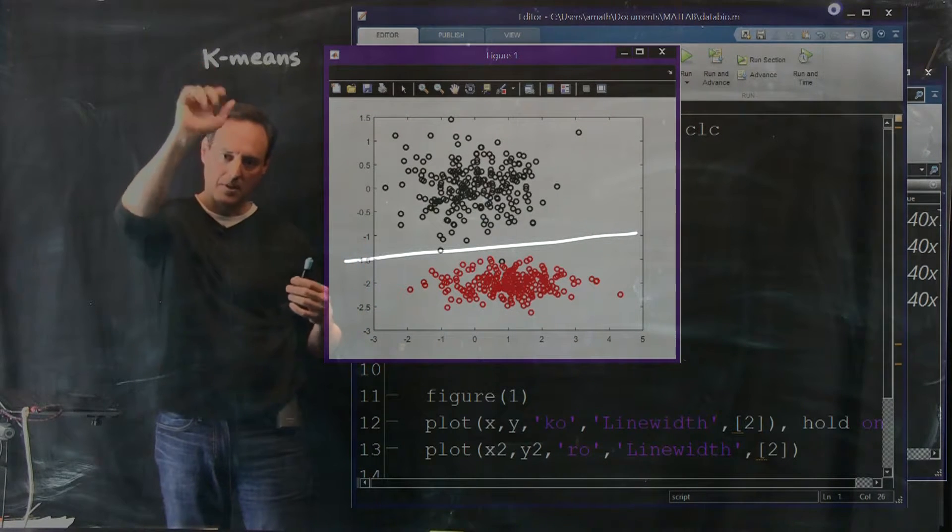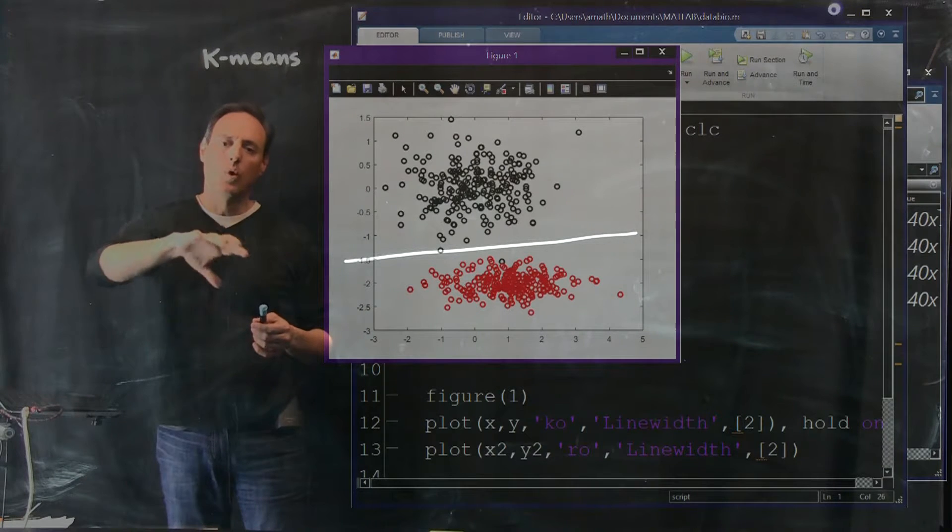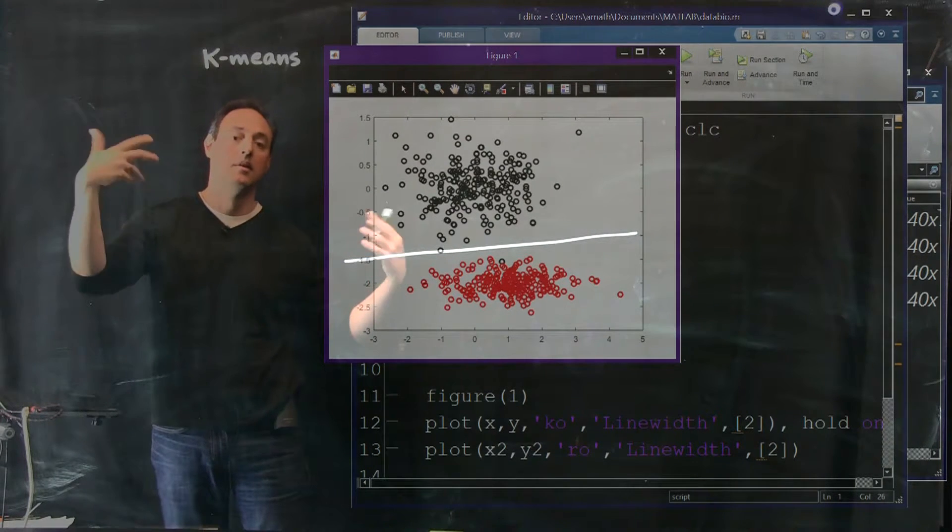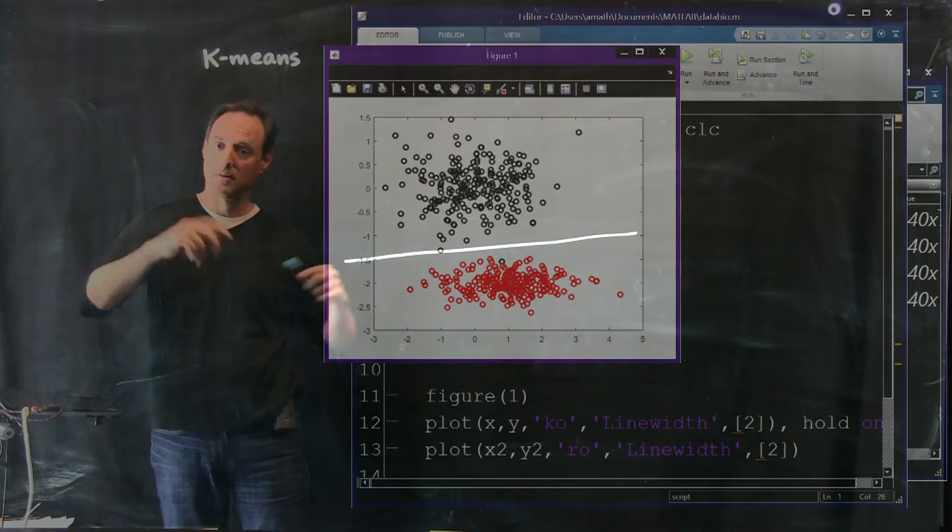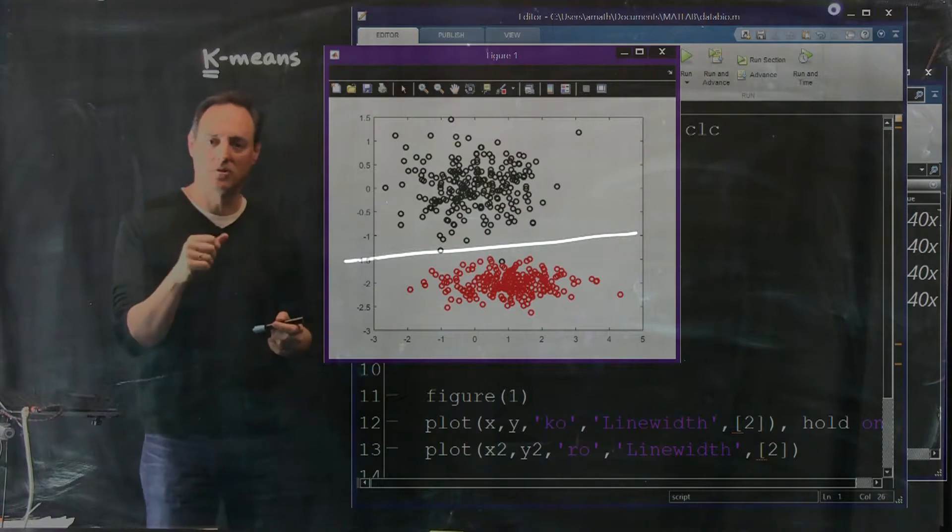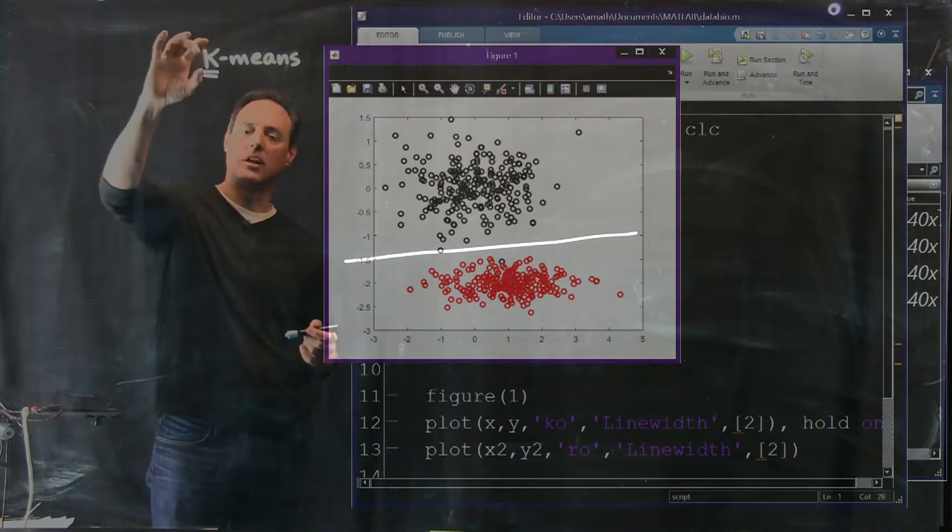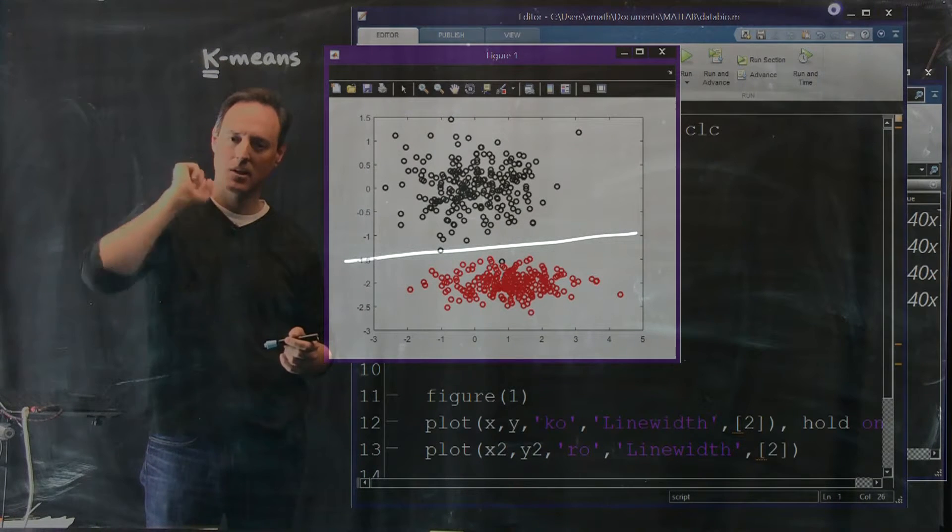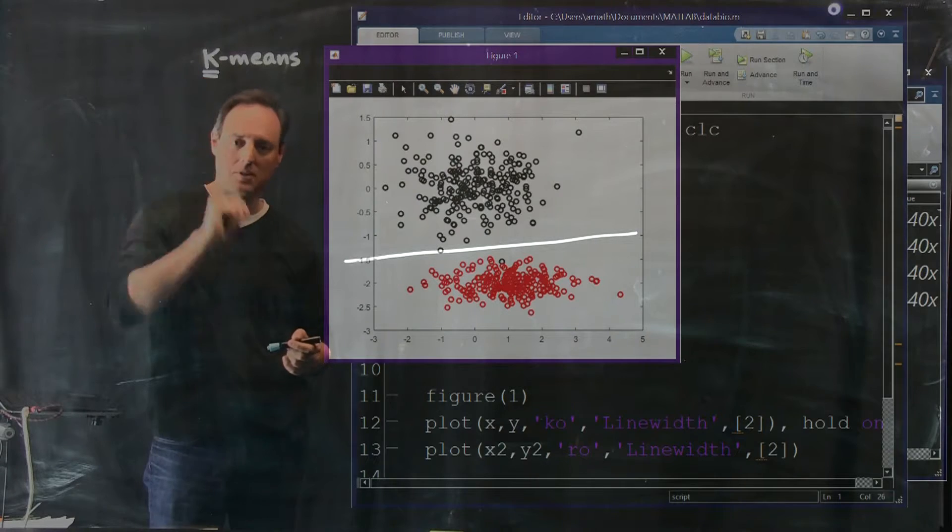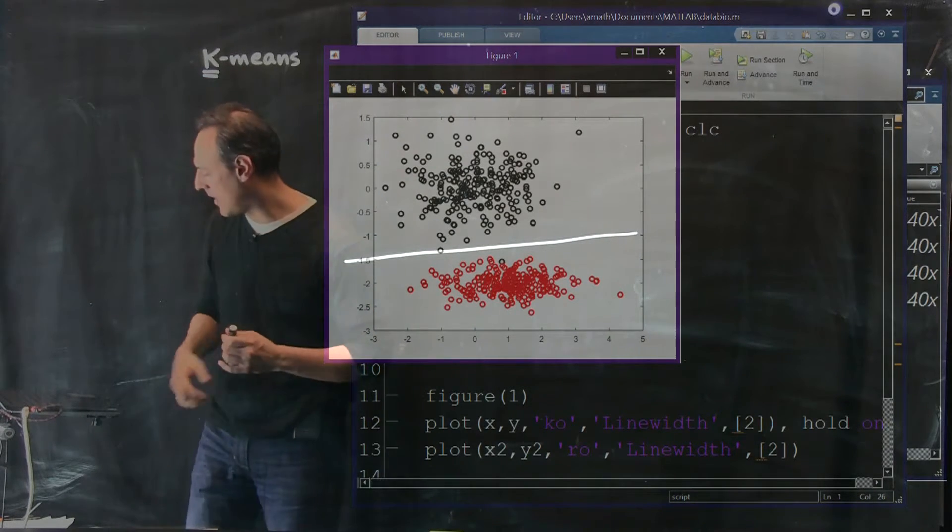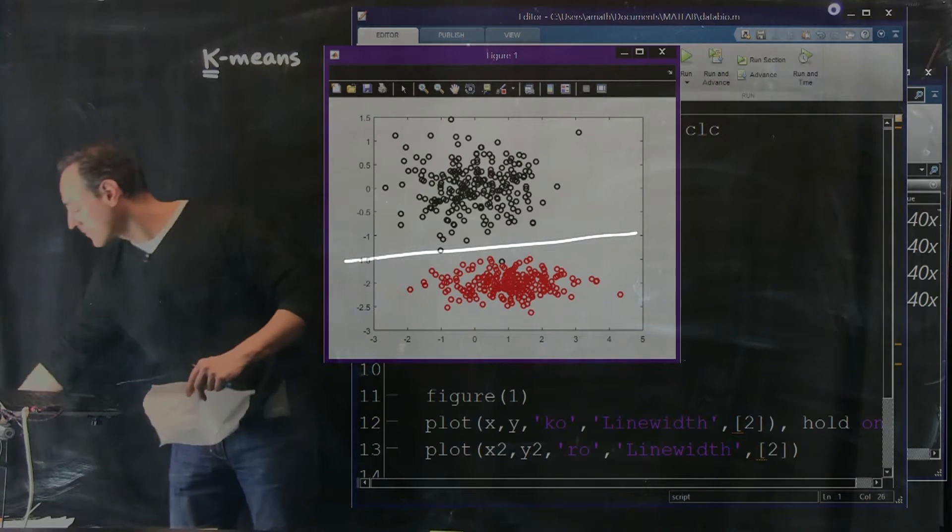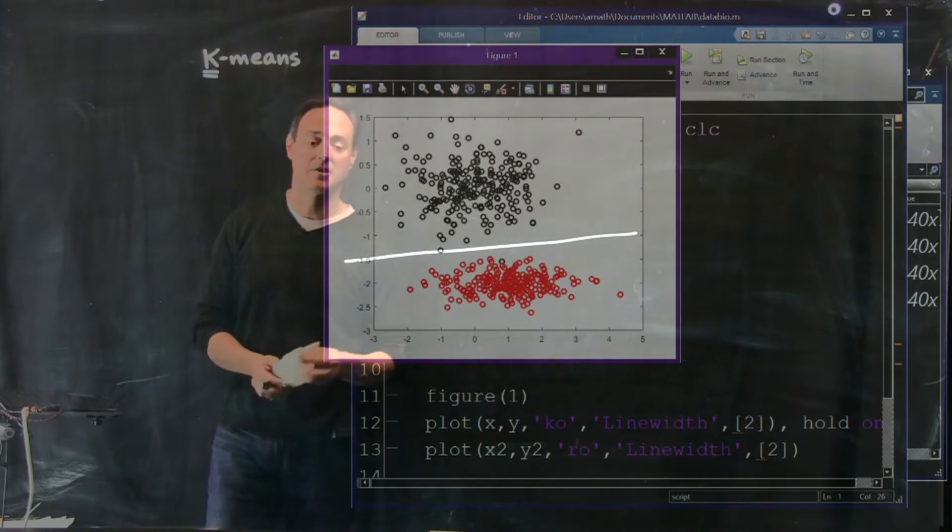Now, I want to walk through with you what the k-means algorithm does. It's very simple. What you get to do with the algorithm is pick the number of clusters you want this algorithm to look for. That k is typically that number. So in other words, k-means, you're looking for k clustering means. In this case, we're going to try for two means, two clusters.